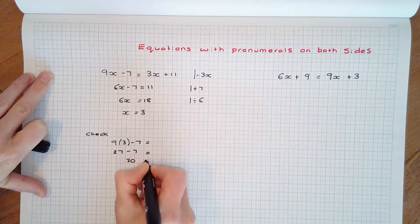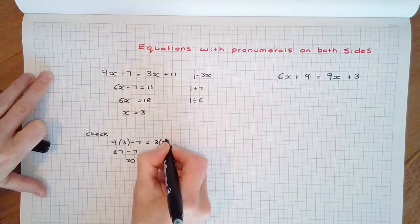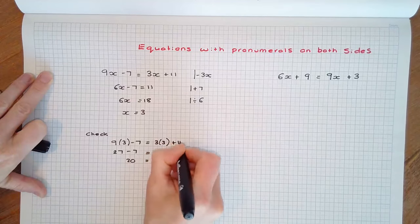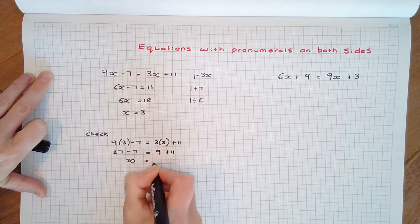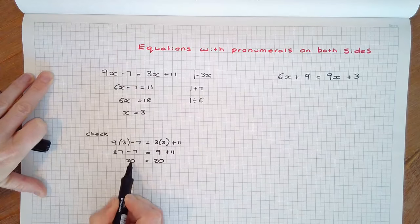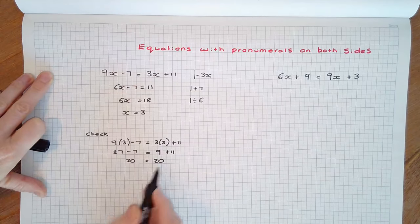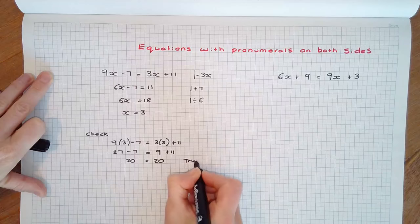It should also equal 3 times 3 plus 11, which is 9 plus 11, which is also 20. Since the left-hand side equals the right-hand side, our solution is true.